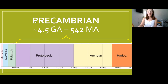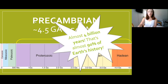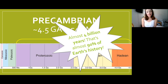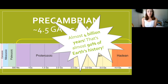Before we start with the Hadean, I just want to point out how large a time interval the Precambrian really was. If we look at this timescale, the Paleozoic, Mesozoic, and Cenozoic past 542 million years was actually only about 10% of all Earth's history. But the Precambrian was almost 90% of Earth's history, representing what Earth has been like for most of its life.